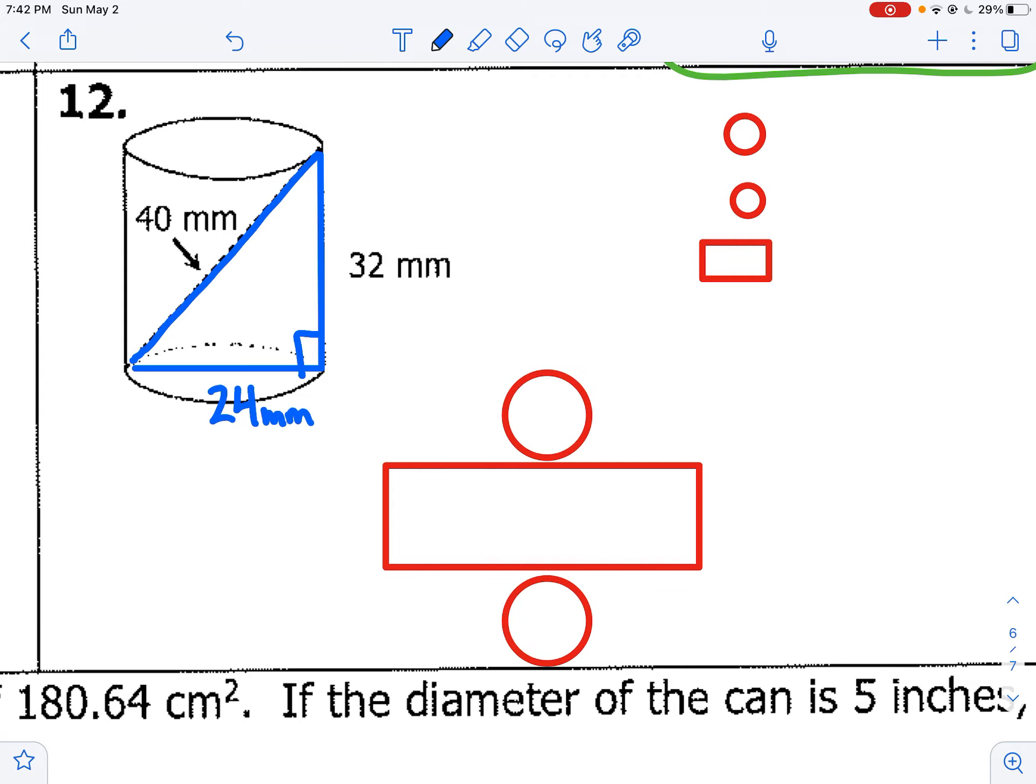And I can use my Pythagorean theorem to find out that this should be 24 millimeters. It's a 6, 8, 10. So 6 times 4, 8 times 4, 10 times 4. Or a 3, 4, 5. If you did 3 times 8, 4 times 8, 5 times 8. Which means that our radius is going to be 12.